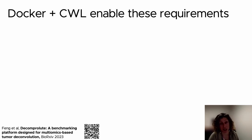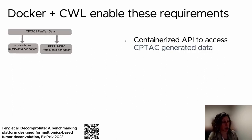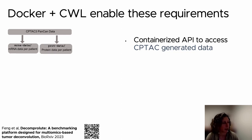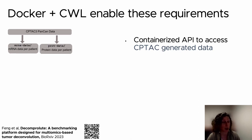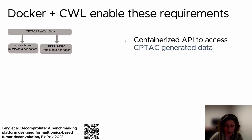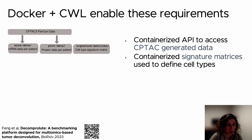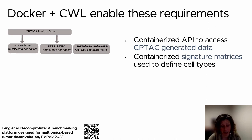We were able to achieve all these requirements through the use of Docker containerization and the Common Workflow Language. We took the CPTAC pan-cancer dataset, stored on Box and exported via a Python package, and containerized it into individual Docker containers that explicitly exported the mRNA data and protein data — with tumor type and whether you wanted tumor or normal sample data as inputs. There were CWL tools for both the mRNA and protein data. We also created a Docker container explicitly for the signature matrices, implementing four or five signature matrices accessible by name in the proper format.